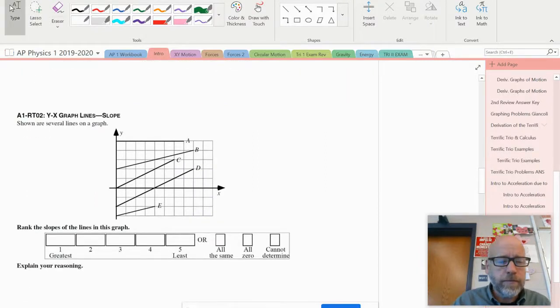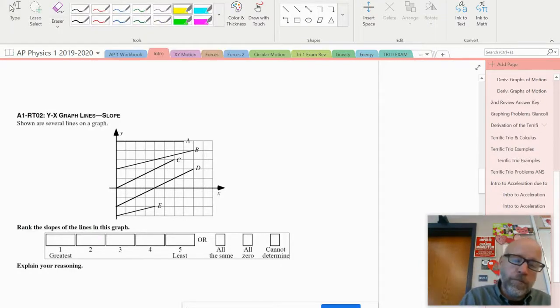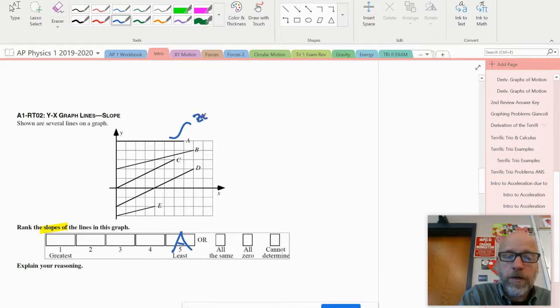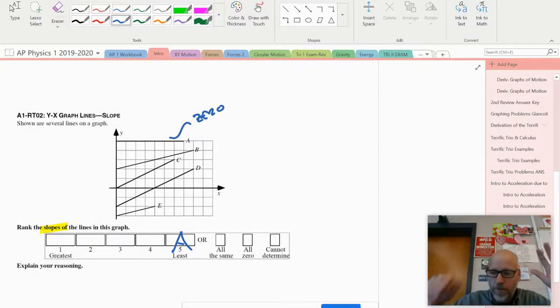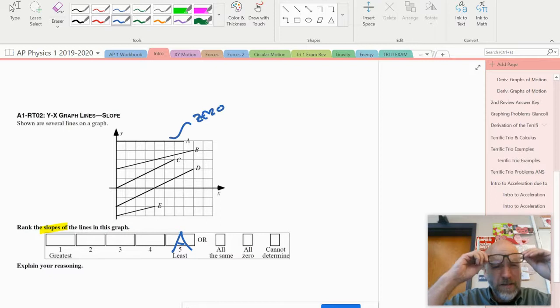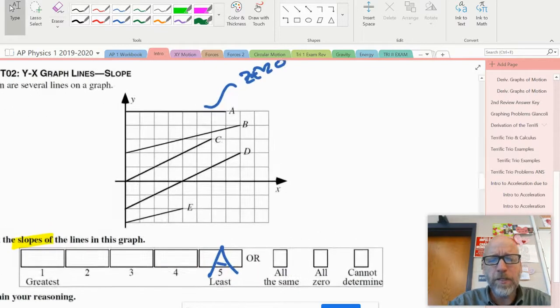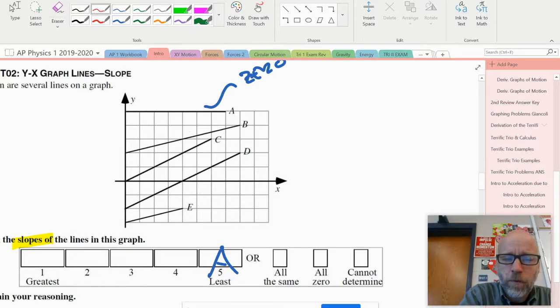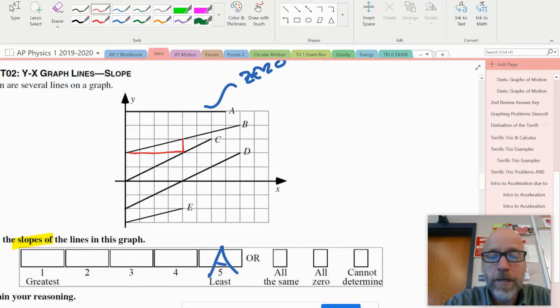Last one: shown are several lines on a graph, rank the slopes from greatest to least. Any easy ones? I see that A has a slope equal to zero—that's going to be the least. I started off with A is clearly the least because the slope is zero. The rest of them, B looks the least steep, but when I look closer and actually find the slope, if I pick two points on that line, the slope of B is one over four. Slope for E is the same thing, one over four, so I know that B is equal to E.